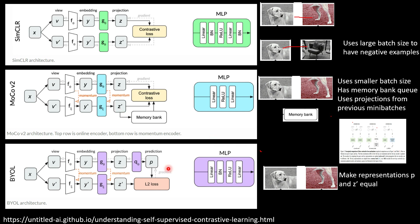Then there is Bootstrap Your Own Latent (BYOL). It does not have a memory bank and does not use any negative pairs. What it does is take two views of the same image, and there is an additional MLP projection network Q-theta which tries to predict the projection P of the view V-bar. The representations are learned such that they can predict the representation of the other view. It tries to make P — the projection of view V-bar — equal to the actual projection Z-bar.